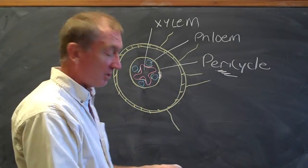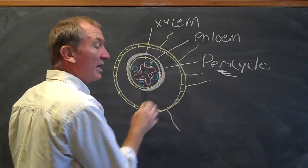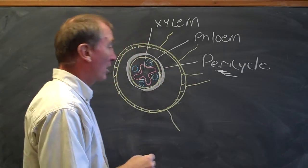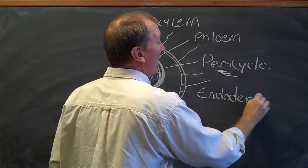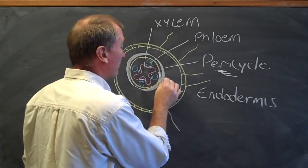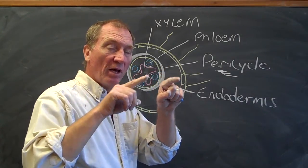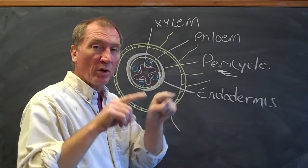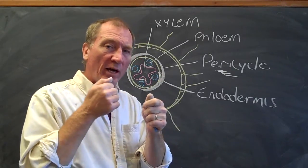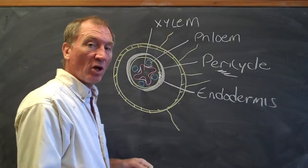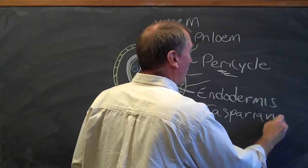Just outside of the pericycle is a layer of cortex cells that's called the endodermis. E-N-D-O-D-E-R-M-I-S. It's part of the cortex. The endodermis cells have around the cells a strip of suberin that makes it waterproof, so that water can't get between the cells. Water has to move through the cells. And this strip is called the Casparian strip, C-A-S...Casparian strip.